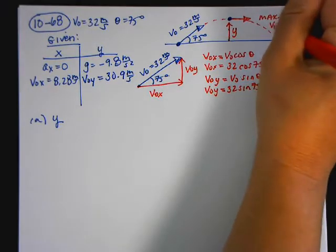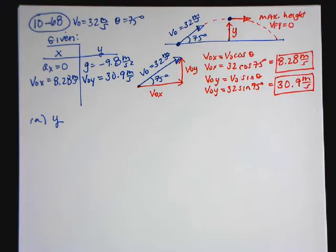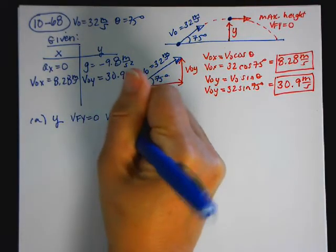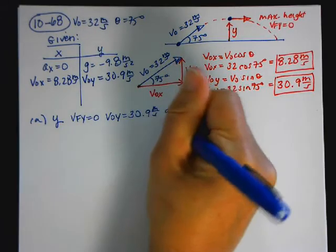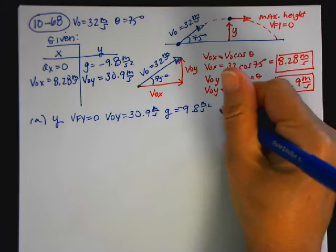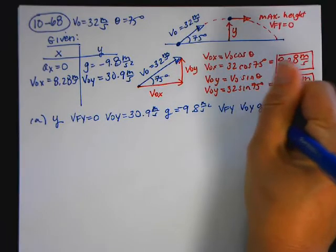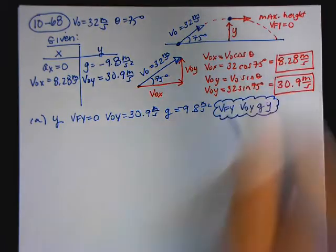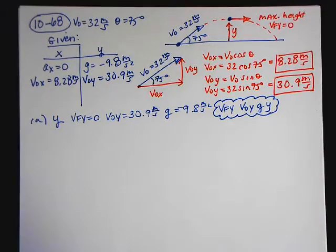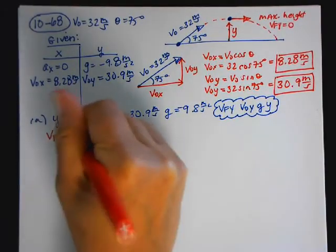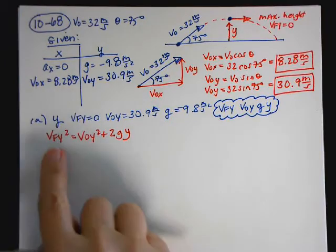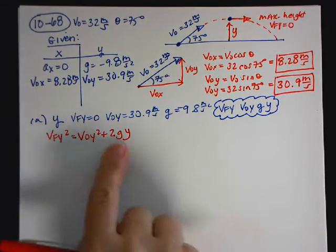So I want to find Y. I know V-F-Y is 0, V-naught Y is 30.9, and G is negative 9.8 meters per second squared. My four variables are V-F-Y, V-naught Y, G, and Y. The equation that has those four variables is V-F-Y squared equals V-naught Y squared plus 2GY. If this were an FRQ on the AP test, you must write this equation down to get the point.